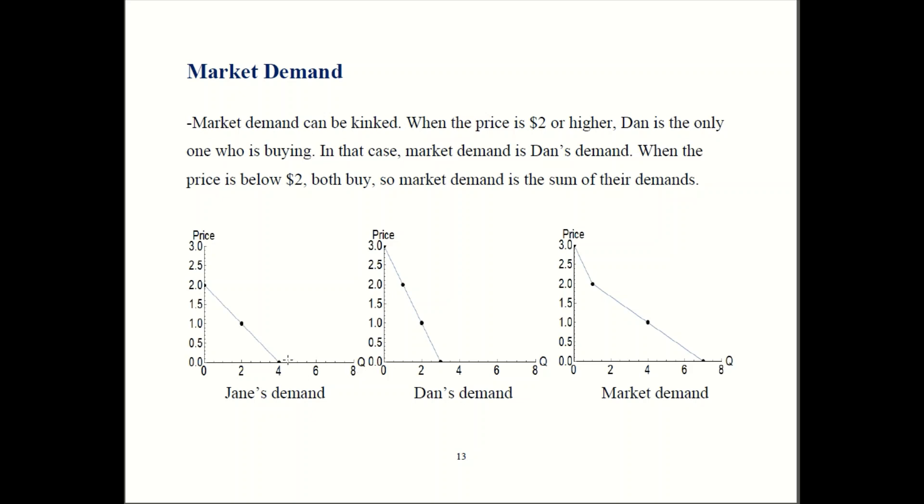When price is zero, Jane buys four and Dan buys three. So total is seven. That gives us the last point on the market demand curve. For this lower portion, both Jane and Dan are buying. So that gives you this slope over here. For the upper portion, only Dan buys. So it has the same slope as Dan's demand curve. It gives you this kink where the slope changes once Jane starts buying.